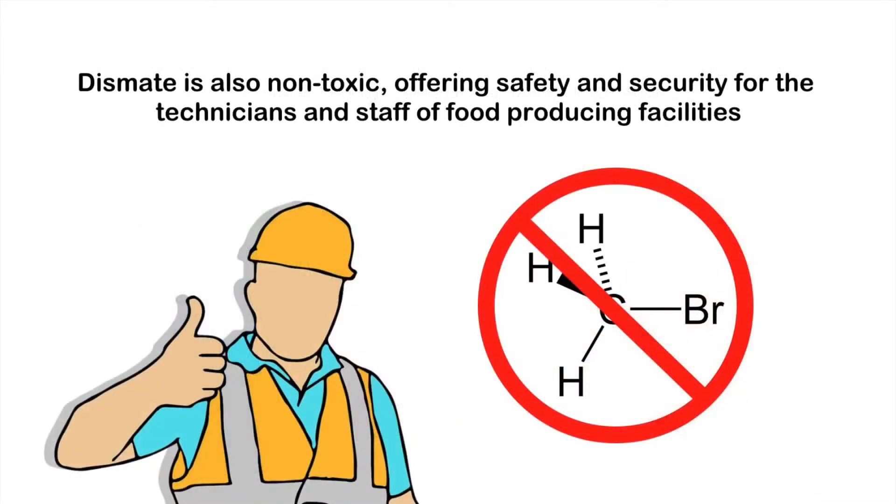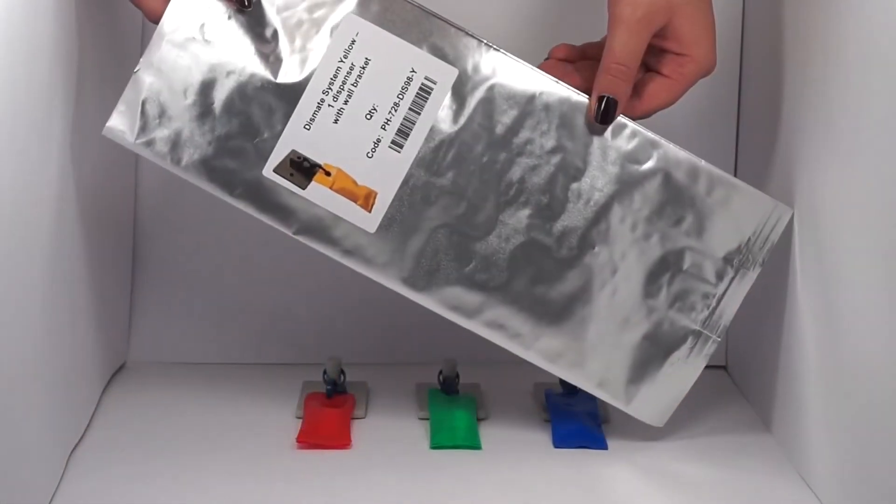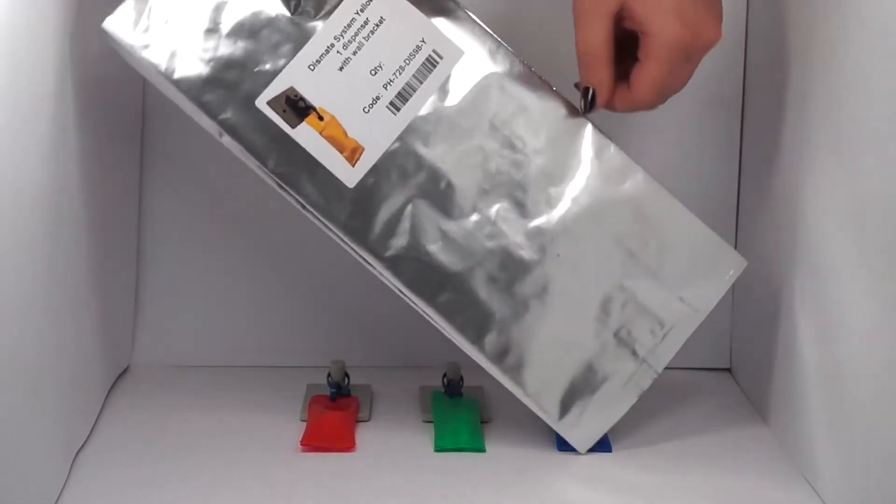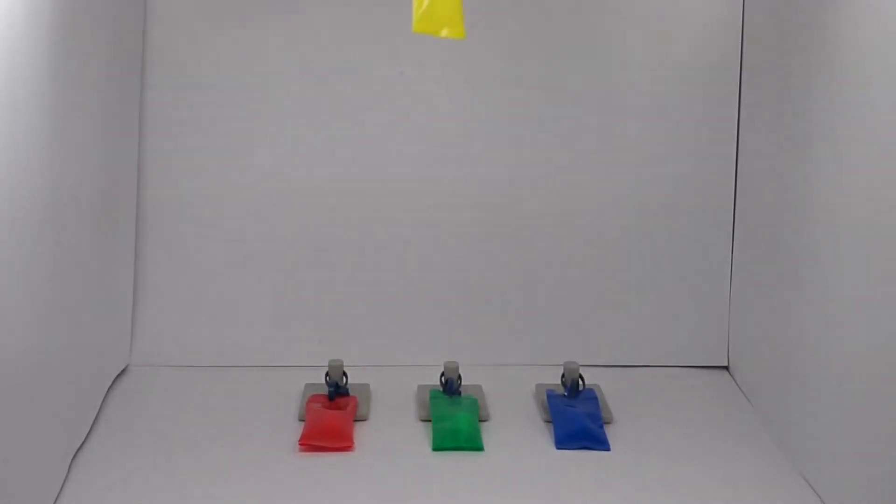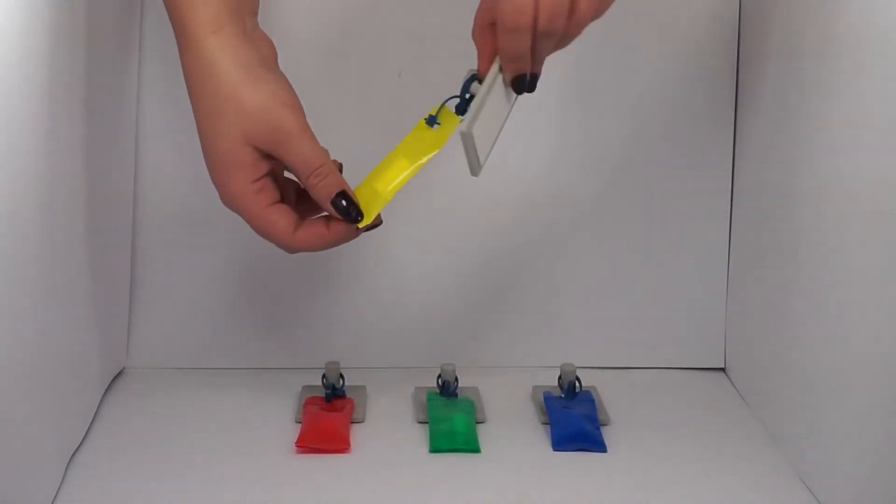Dismate is also non-toxic, offering safety and security for the technicians and staff of food producing facilities. Dismate comes in a protective bag which is ready to use and the system is very easy to install.